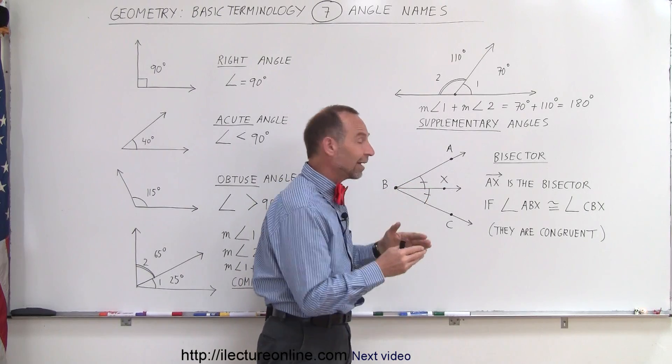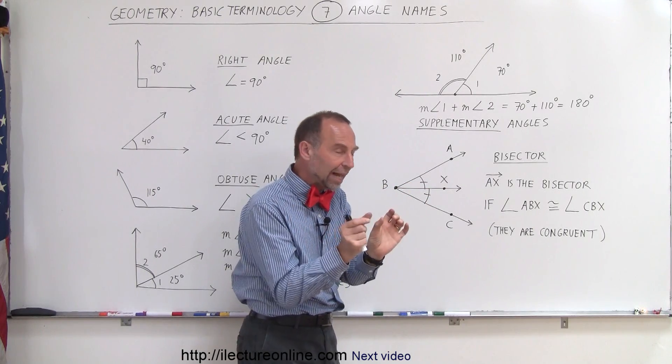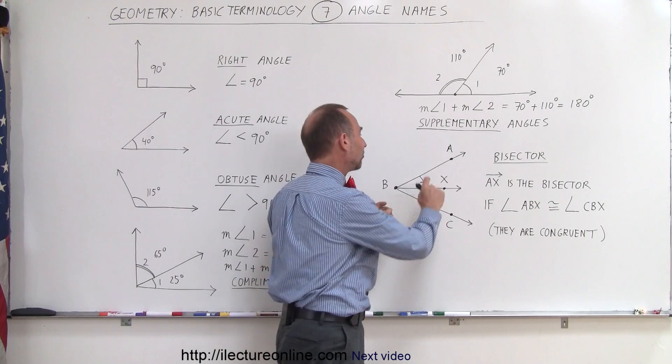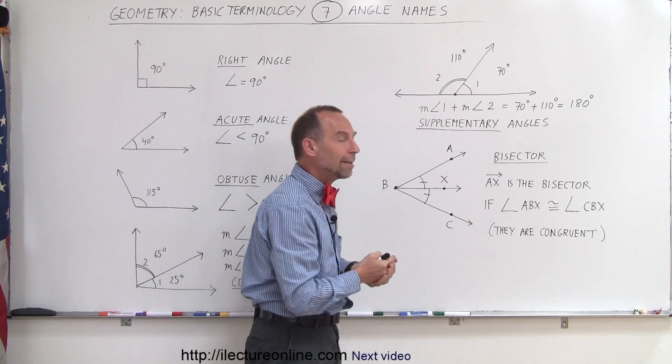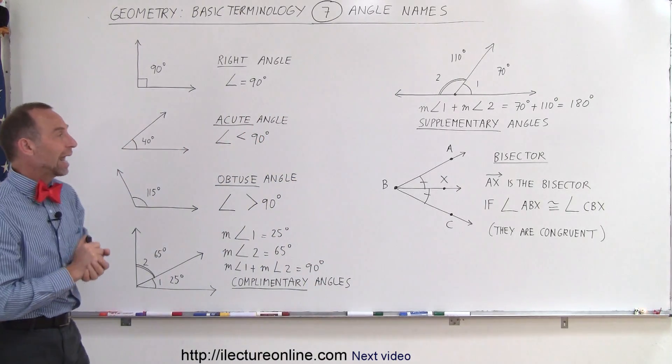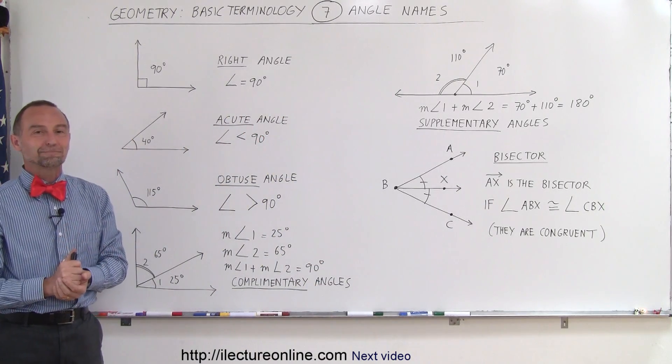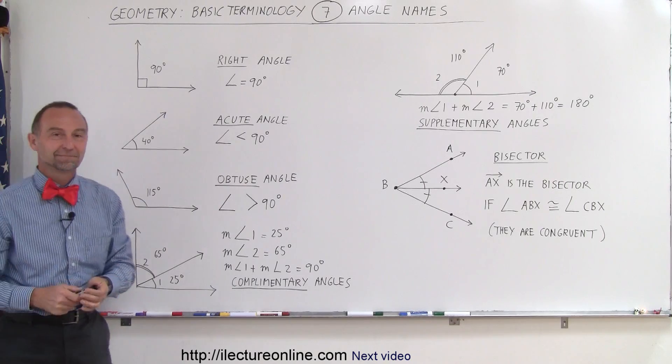And finally, if we have a ray that divides an angle into two equivalent angles, that are each exactly half the size of the original angle in measure, then that is called a bisector. And that's the naming convention we use for angles in geometry. And once again...